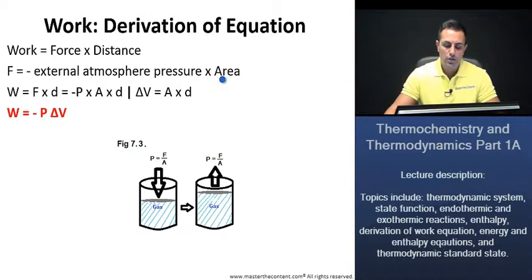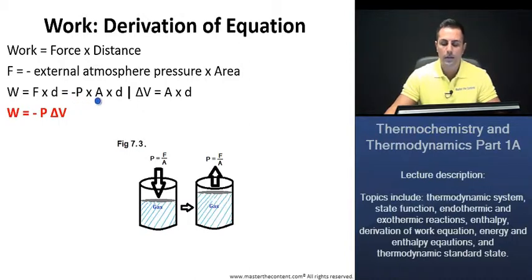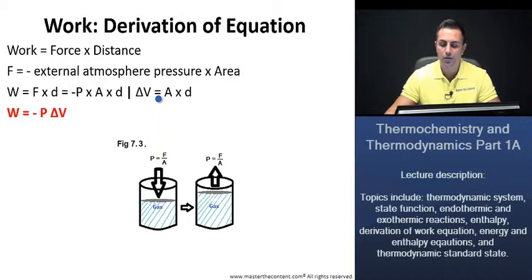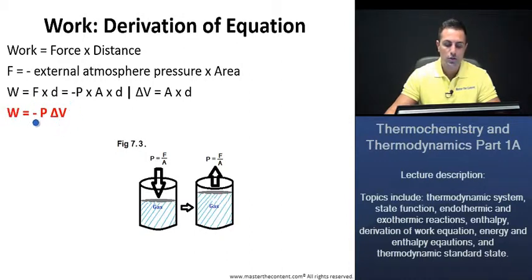Now, if we actually take that term and plug it in for force in our work equation, we end up with the external atmospheric pressure times the area of that piston times the distance. Furthermore, we also know that the change in volume for a system is area times distance. If we plug that into our equation, we end up with the equation where work is equal to the external atmospheric pressure times the change in volume.